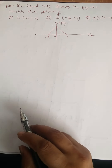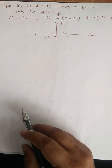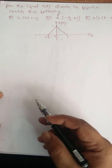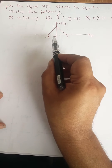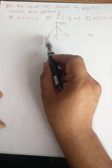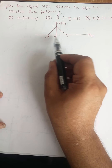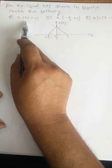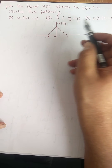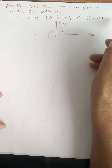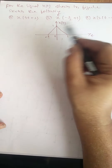I am taking one more problem on basic operations of signals. For the signal x of t shown in the figure, this is x of t, it is in the triangular shape and it exists from minus 1 to plus 1. I should sketch x of 3t plus 2, x of minus t by 2 plus 1, and x of 2 into t minus 1.